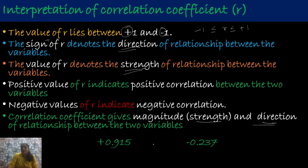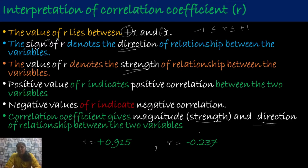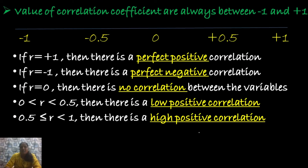For example, let me take two values. The first value of R is plus 0.915 and the second value of R is minus 0.237. Based on these values, we have to interpret the correlation between the two variables. Before that, let me give you a short introduction about the strength of the relationship, whether it may be stronger or weaker.